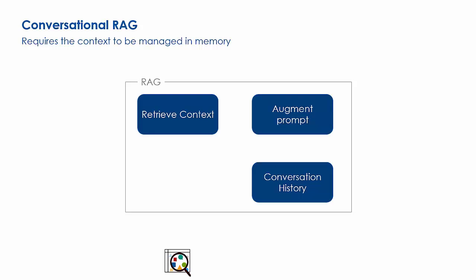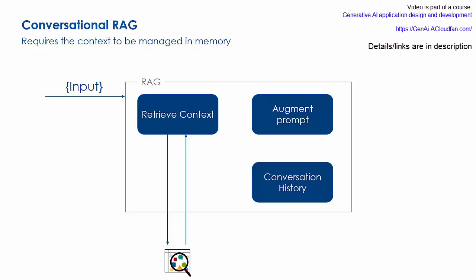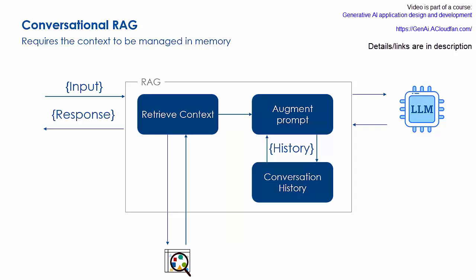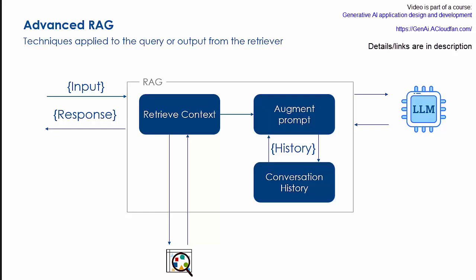Conversational RAG requires an additional component to manage the conversation history, which may be thought of as the memory for the RAG implementation. Let's go over the flow: the chat bot receives an input, this input is then sent to the retrieval system, the retrieval system such as a vector store then returns appropriate contextual information. A prompt is then created with the retrieved context, conversation history, and the received input. This prompt is then sent to the LLM. The response received from the LLM and the input is then added to the conversation history, and the final response is then sent to the caller.